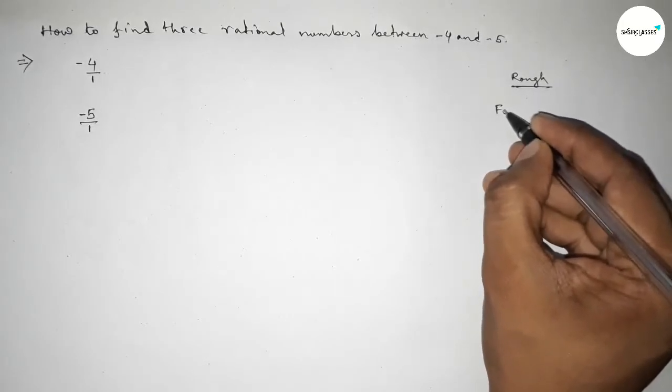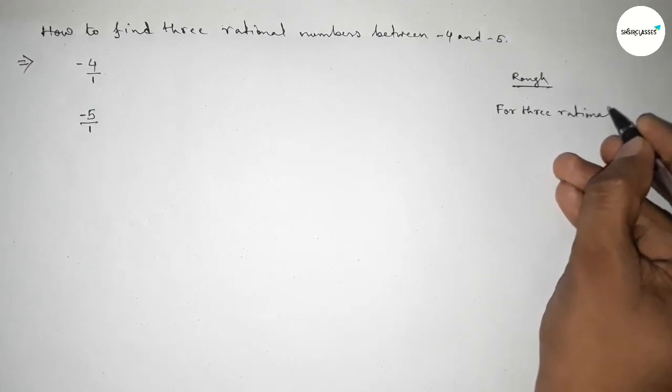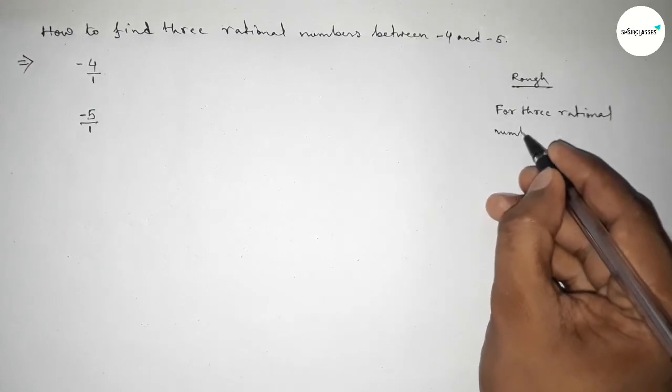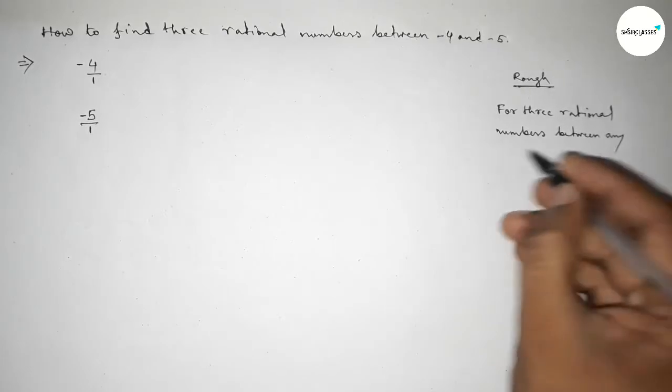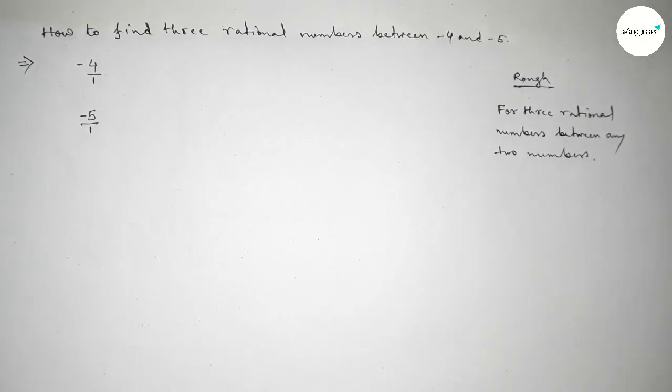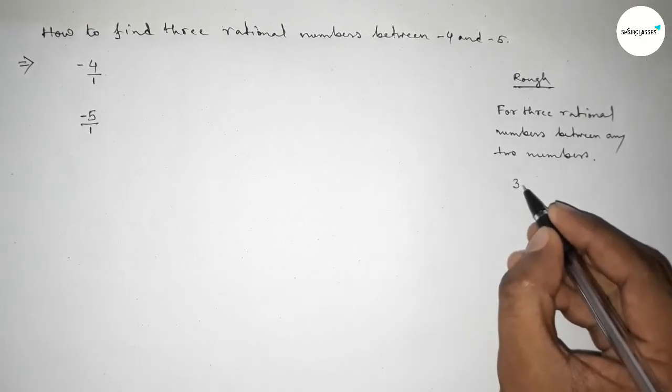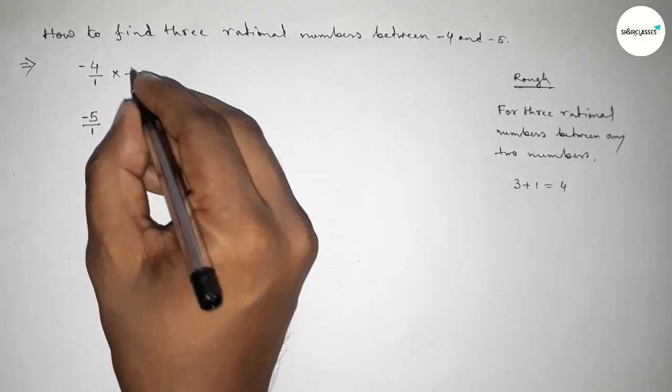So here the method is: for finding three rational numbers between any two numbers, we have to follow this method. We should multiply both numbers by 3 + 1 = 4. So multiplying both numbers by 4.